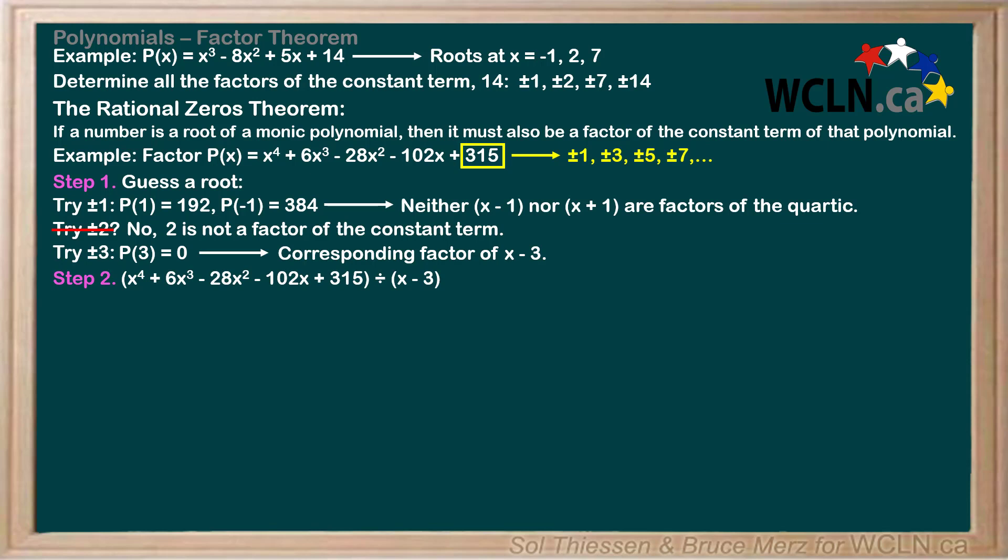Now, onto step 2, where we divide the original polynomial by the factor we've just found, to get a quotient that is 1 degree lower than the original function. Feel free to take this opportunity to practice your long or synthetic division by pausing the video now. Okay, so hopefully you found a quotient of x cubed plus 9x squared minus x minus 105, with the remainder of 0, of course. We can now rewrite the original quartic as the product of this quotient and the factor we found, x minus 3.